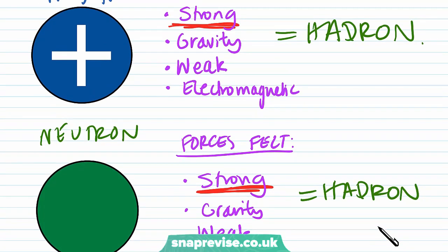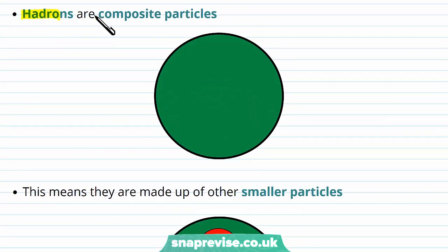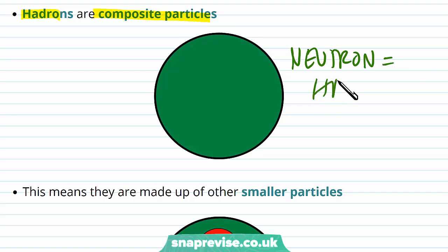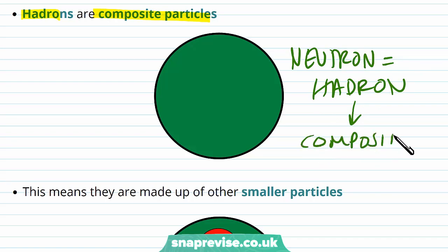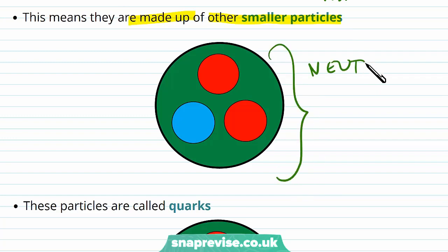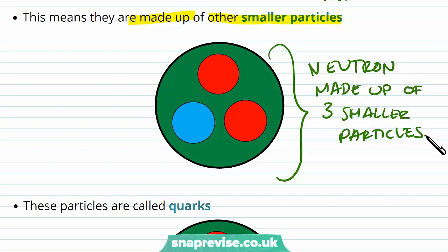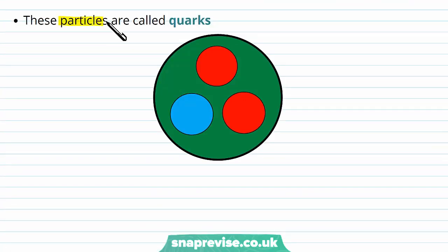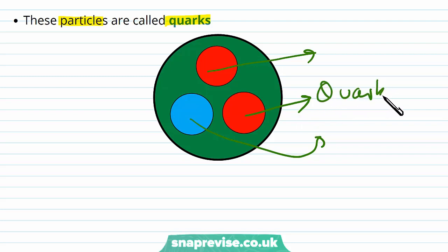Both the proton and the neutron are hadrons because they both experience the strong nuclear force. Hadrons are composite particles — meaning they're made up of other smaller particles. If we look at a neutron in more detail, we can see that it is made up of three smaller particles called quarks. We're going to look at quarks in a lot more detail in another video.